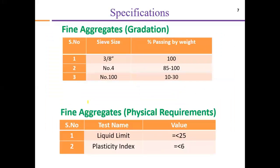The specific gravity value should be a minimum of 2.5. Regarding fine aggregate or screening material gradation: 100% should pass through a 3/8-inch sieve, 85 to 100% should pass through sieve number 4, and 10 to 30% should pass through sieve number 100. The physical requirements for screening material are: liquid limit should be equal to or less than 25, and plasticity index maximum recommended value is 6.